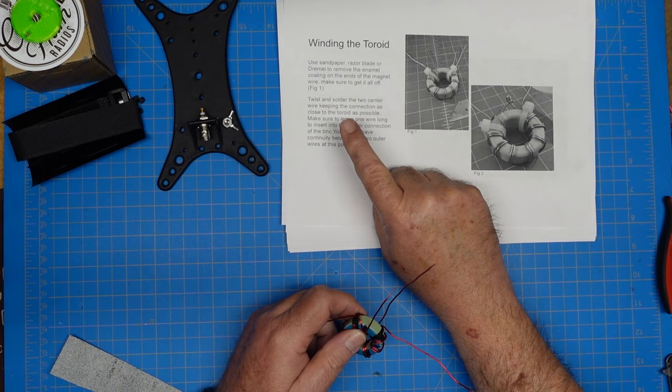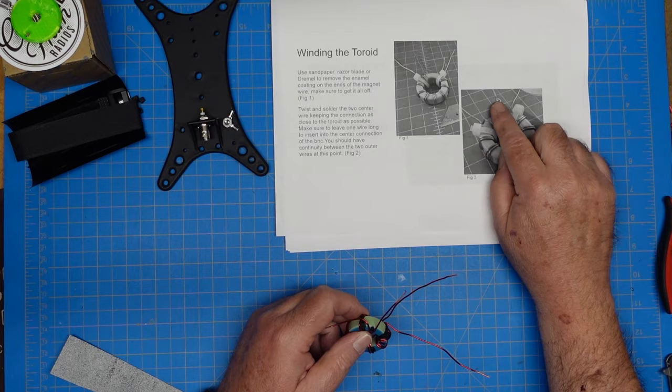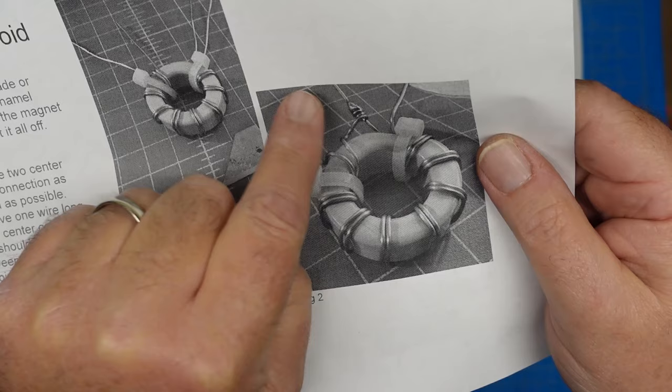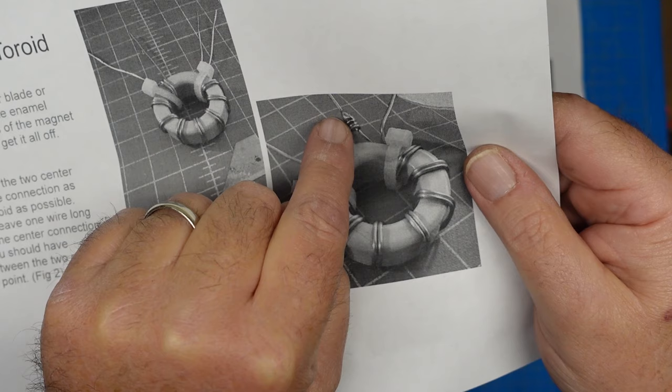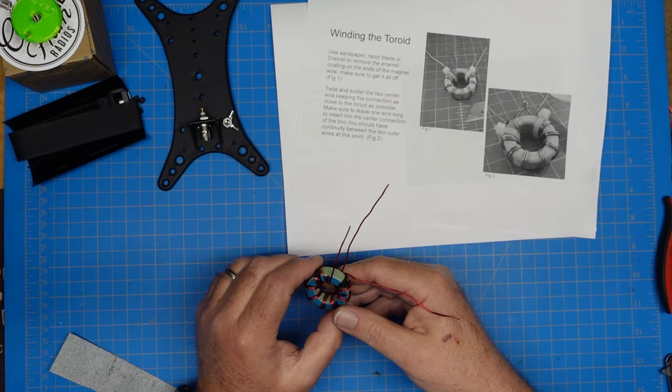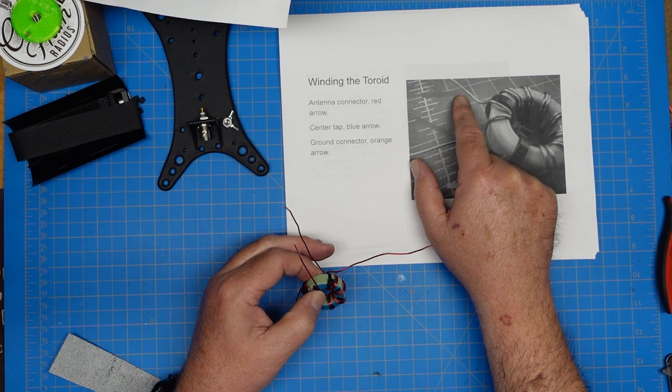The instructions are a little unclear here, but following the picture, you can see the center wires go together. When he talks about making one wire long enough, that's one of the outer wires that will be our ground and radials and radiator. So we're going to fasten our center wires together. I didn't understand the instructions completely here.